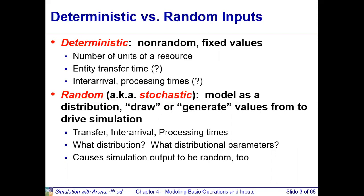We want to generate input statistics — like arrival time, process time, and transfer time — based on a certain kind of probability distribution. When we take a realization for each entity to assign a particular input, we want to use a probability distribution, and that's why we need Input Analyzer. We'll collect data, fit a distribution, and from that fitted distribution with certain parameters, we will generate a random variable for each entity to assign service time, inter-arrival time, transfer time, and so on. We have to find what distribution a particular set of data fits and what the parameters are.